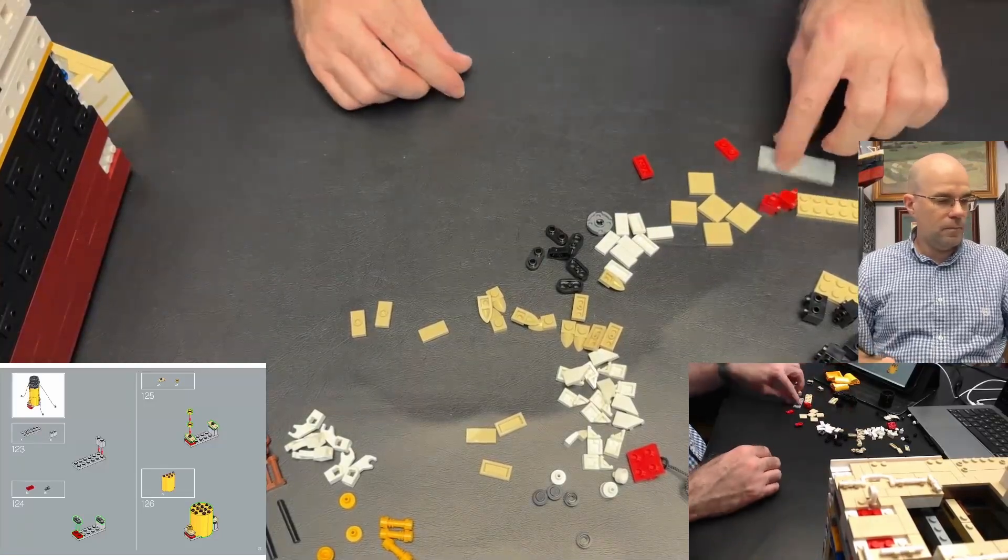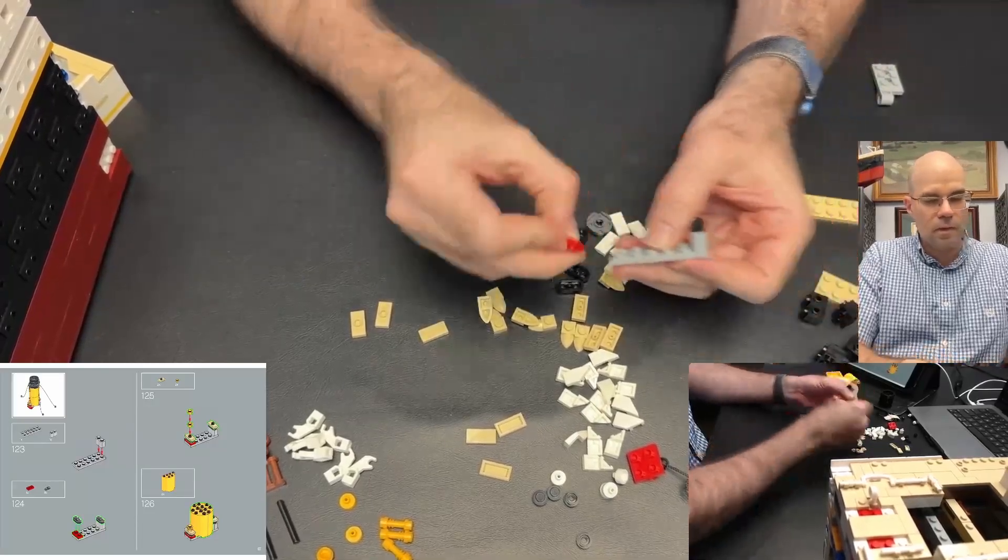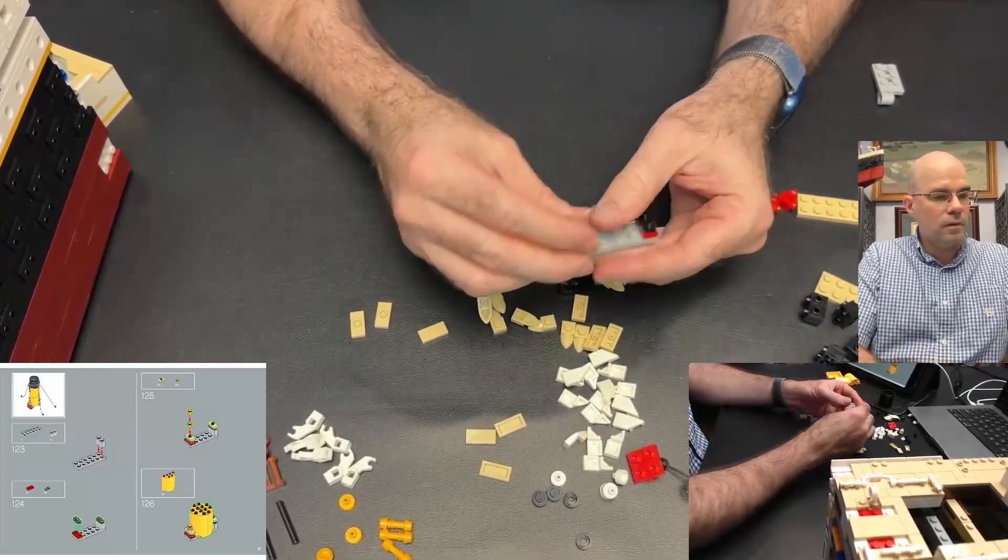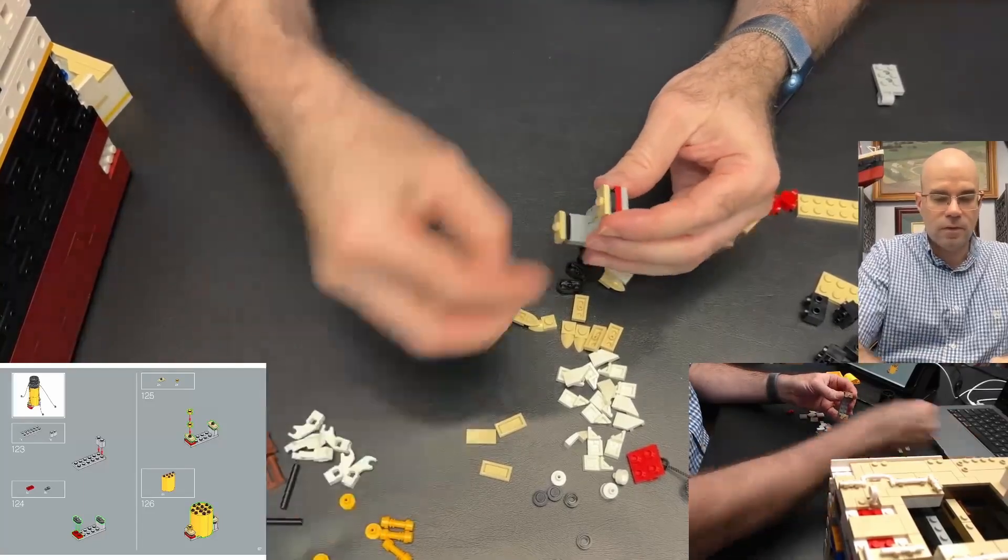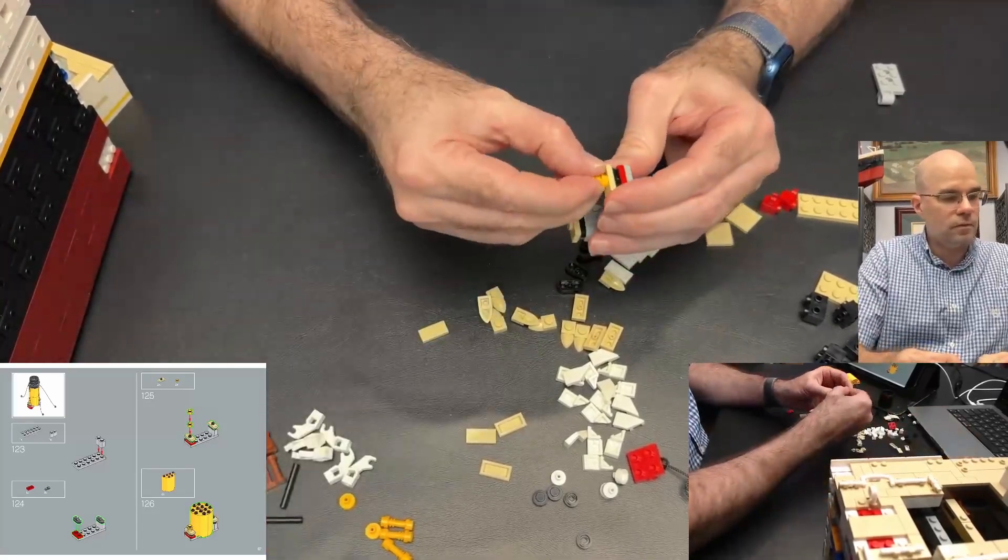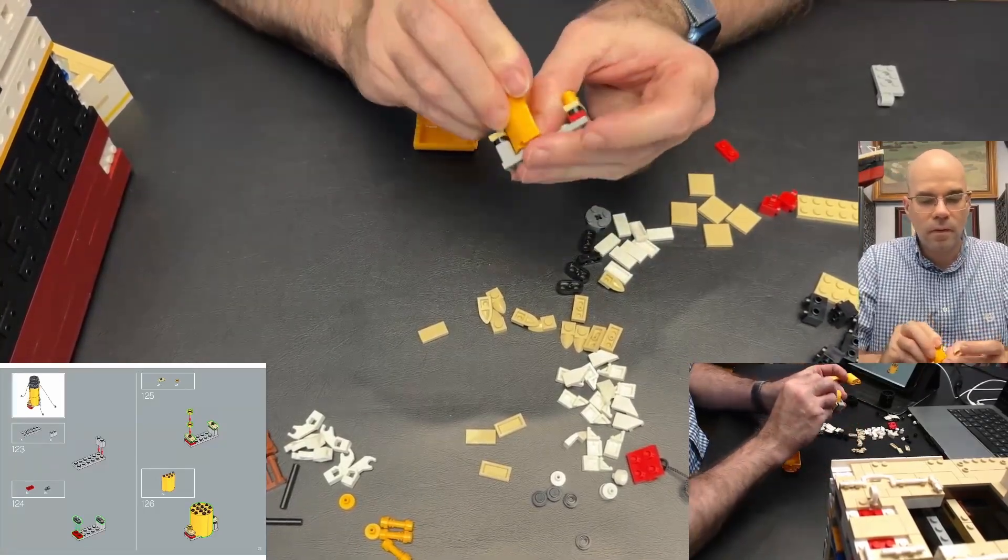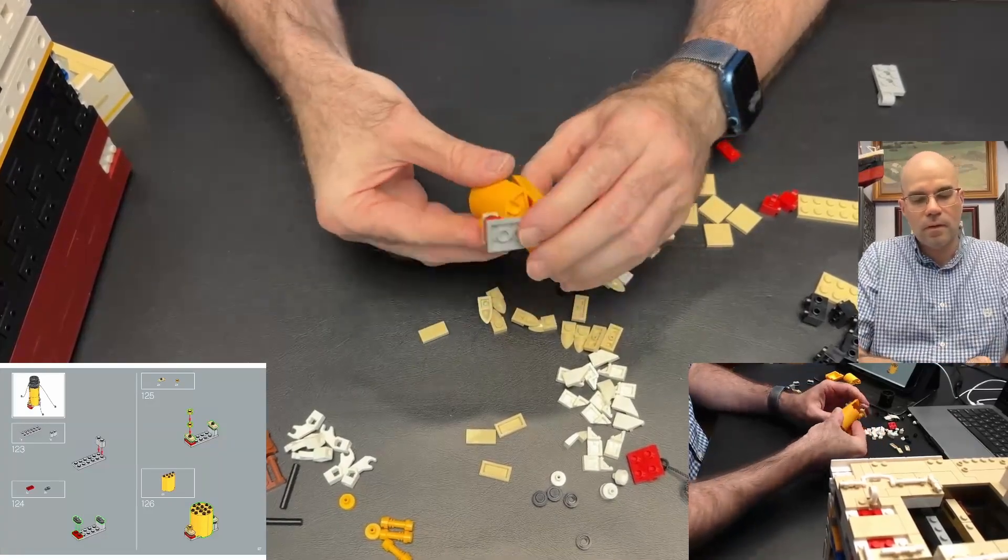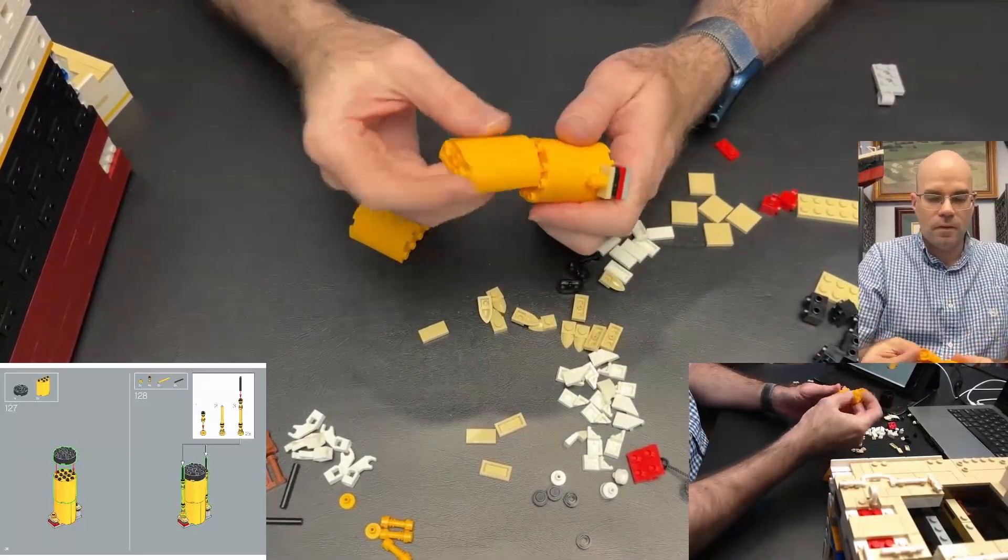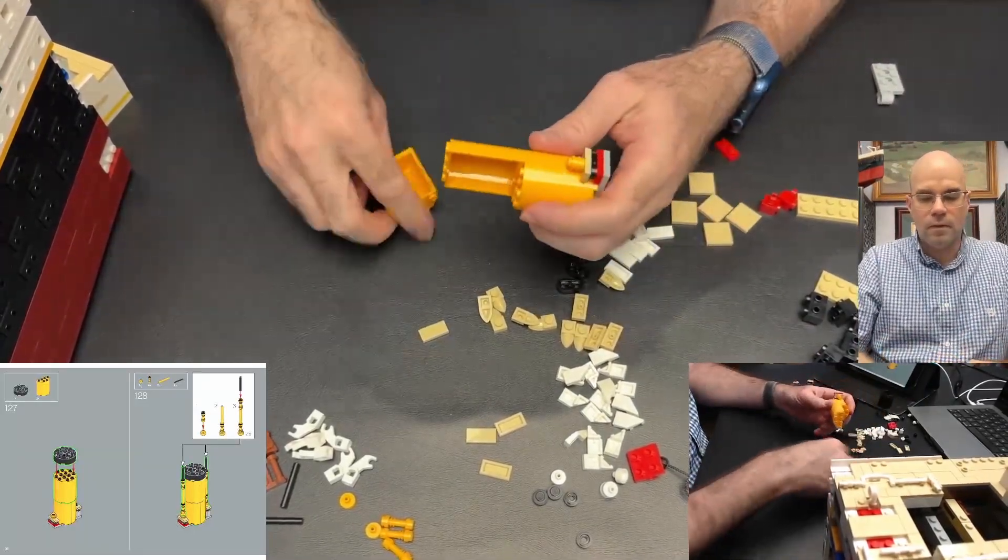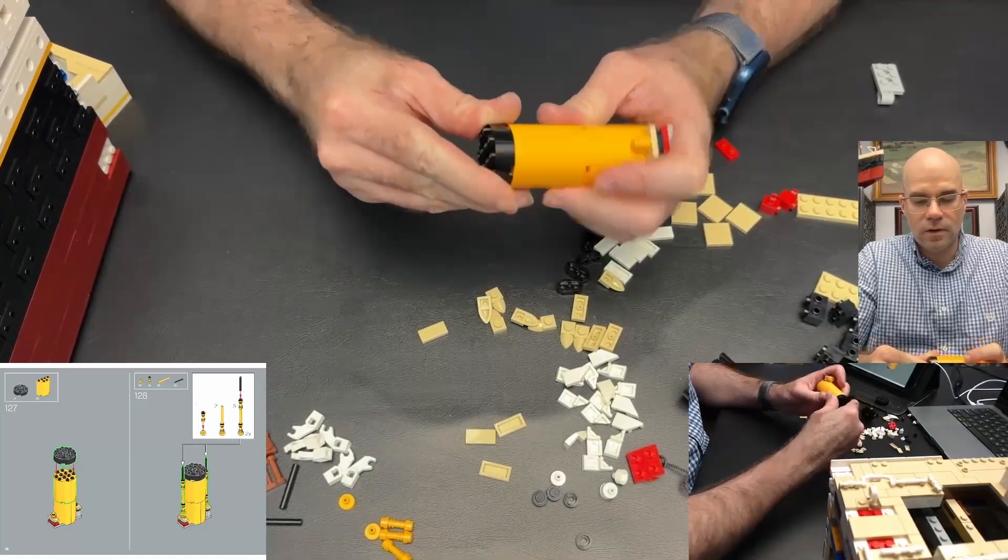Now the main funnel piece here. Same thing with these jumpers and then the yellow studs. These curved panels. And then the round brick, 4x4.